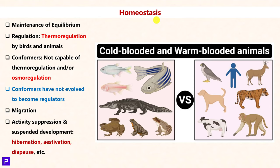Let us now move to the next important topic: Homeostasis in an ecosystem. Homeostasis is the propensity or natural ability of a system to maintain a state of equilibrium. In organisms, there are various mechanisms through which homeostasis is maintained, including thermoregulation, osmoregulation, migration, and activity suppression.